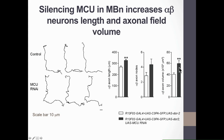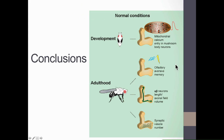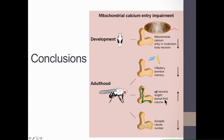In conclusion, mitochondrial calcium entry is required during development in mushroom body neurons for adult flies to have normal intermediate-term memory, normal formation of alpha-beta neurons, and normal synaptic vesicle content. Conversely, when mitochondrial calcium entry is impaired during development, adult flies have impaired intermediate-term memory, their alpha-beta neurons are longer and occupy a bigger axonal field volume, and synaptic vesicle number is decreased.